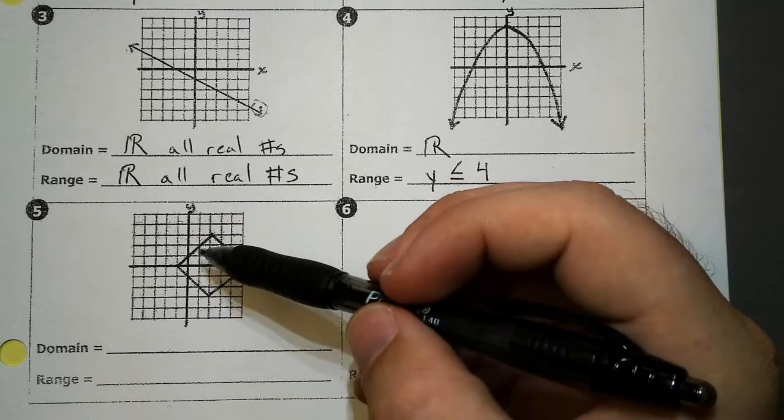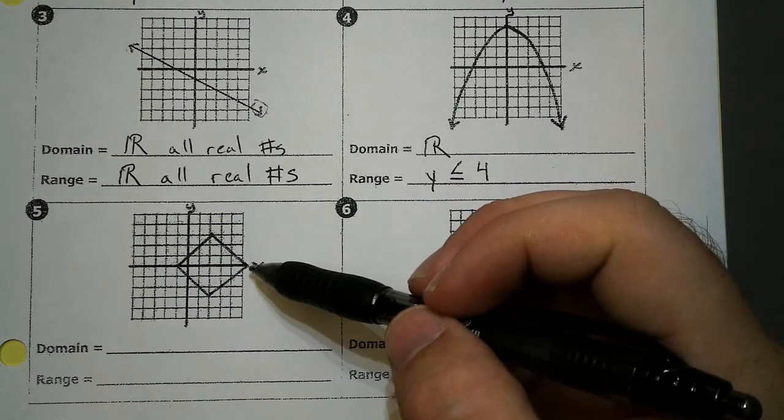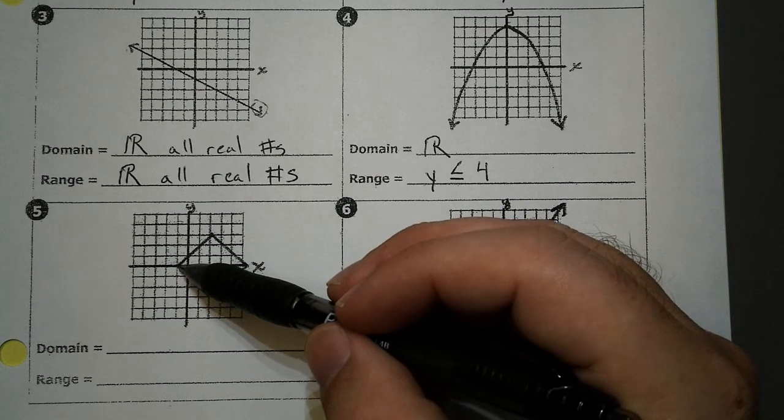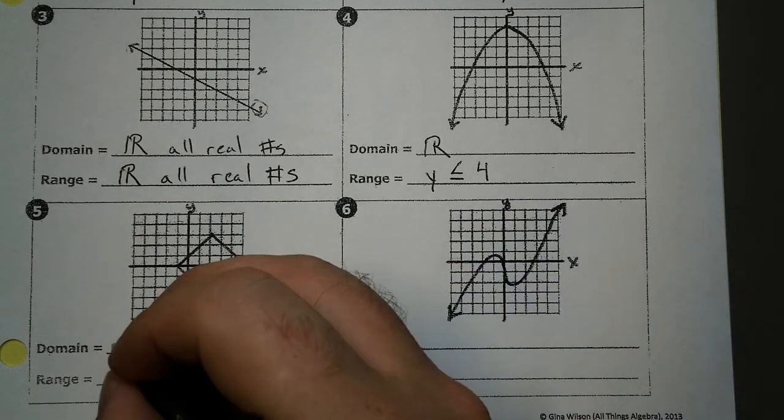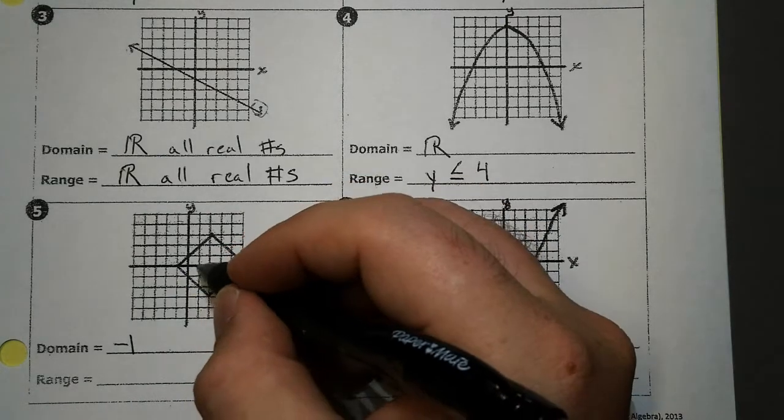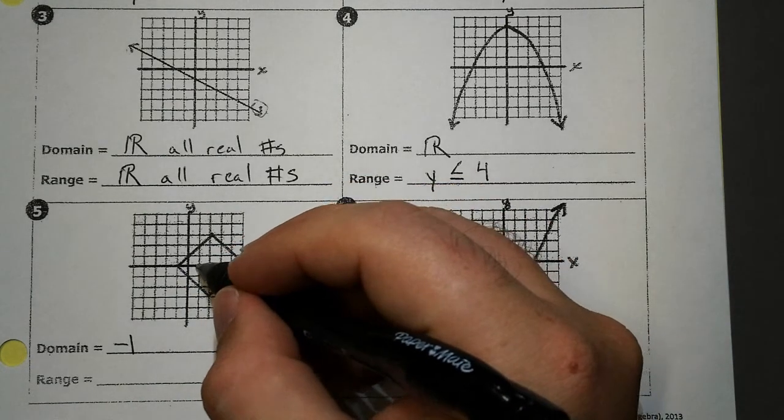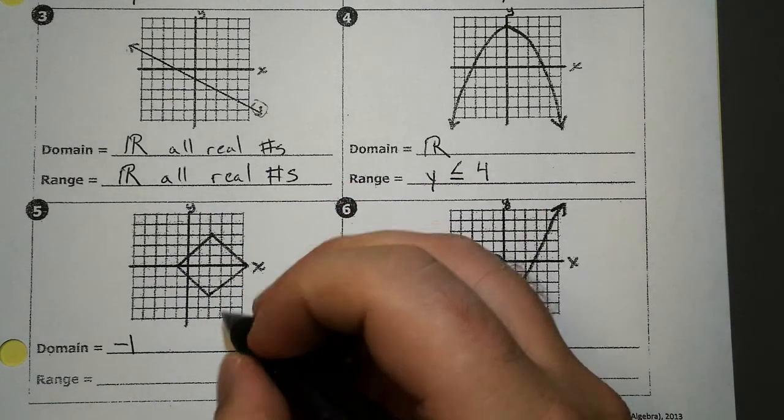All right. So on this one, scanning left to right for the domain. We always do the domain first. I've got it right here. It stops at negative one. And scanning to the right, it goes all the way to one, two, three, four, five, positive five.